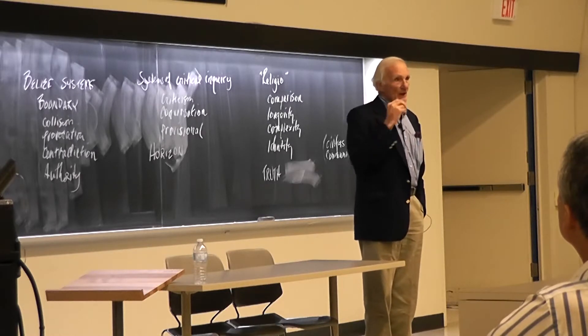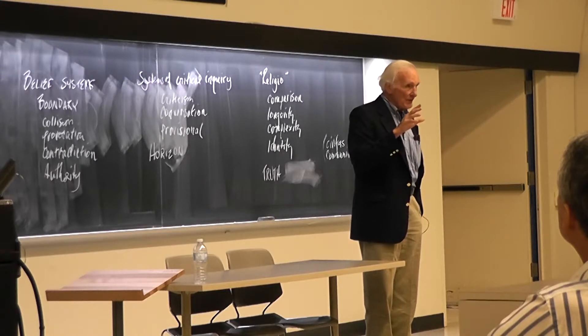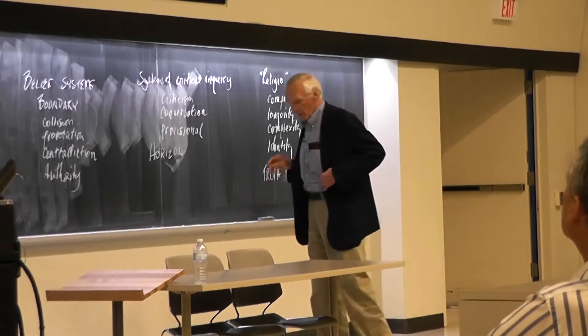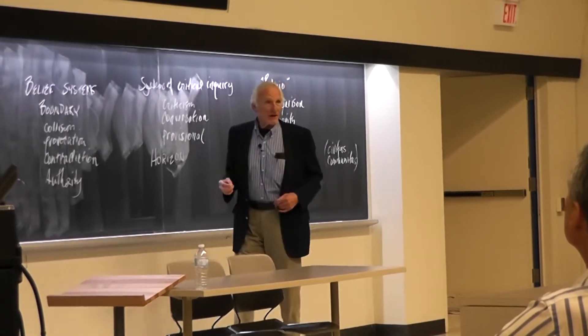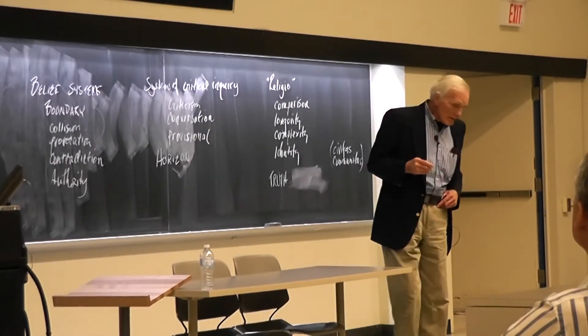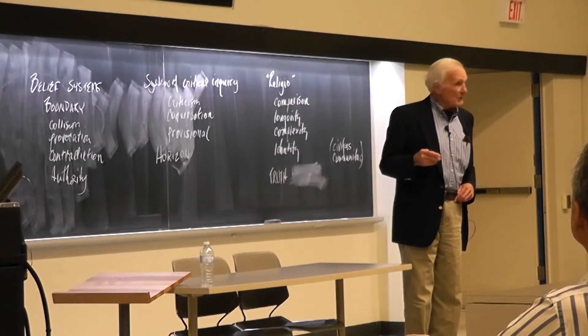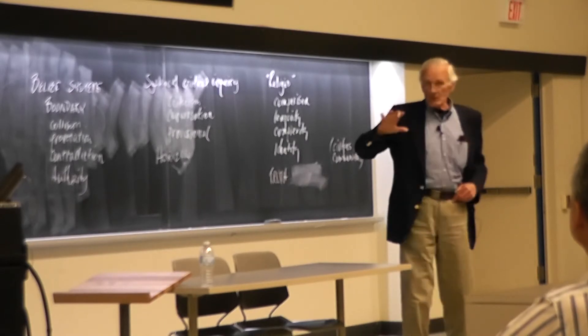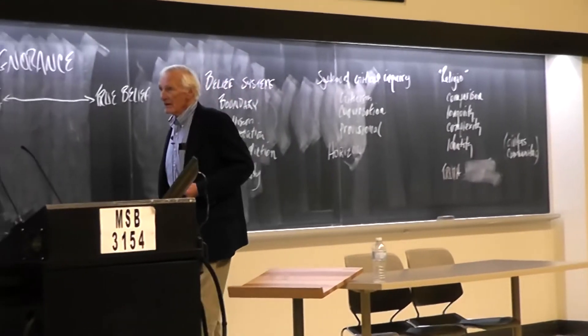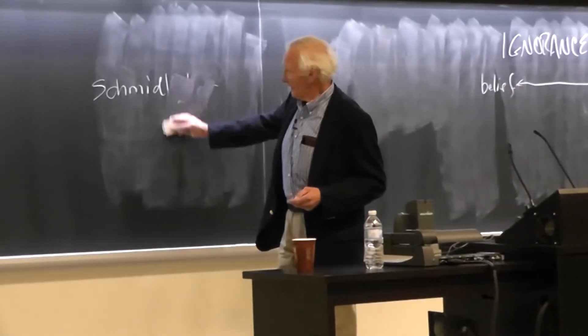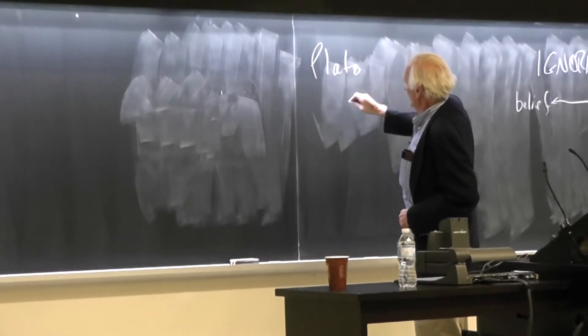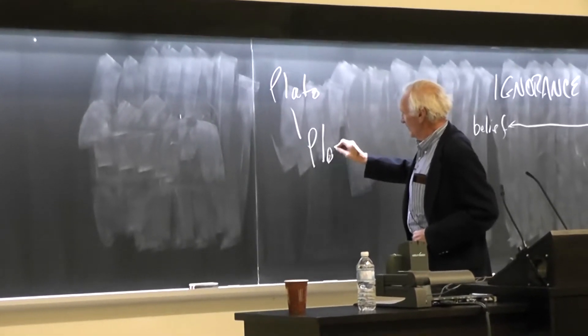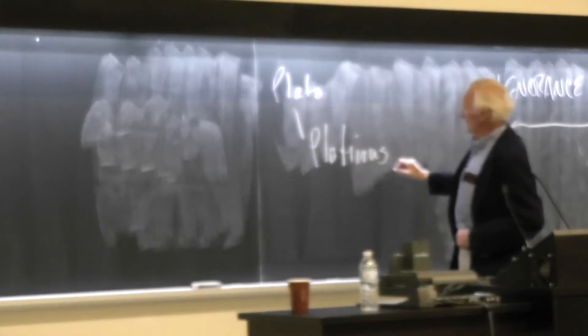There's a third category of ignorance that is much more complicated, a little subtler than the other two. Ordinary ignorance, willful ignorance, and then what I call higher ignorance. It's a concept that I've borrowed from medieval mystics, primarily Meister Eckhart, who's a great Christian mystic. The idea has a long intellectual background. We go back to Plato and come through a philosopher named Plotinus, on up through a tradition into the Middle Ages, to a philosopher named Nicholas of Cusa.